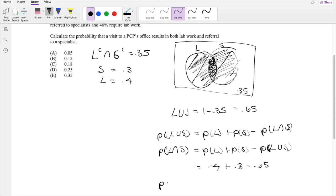So then what we get, the intersection of L and S, which is exactly what we're looking for here, is equal to 0.7 minus 0.65, which is exactly 0.05, our answer A.